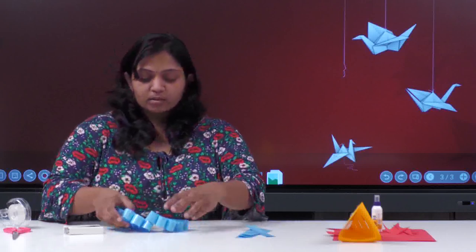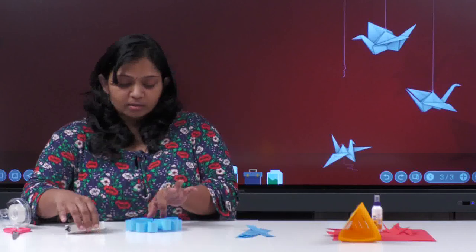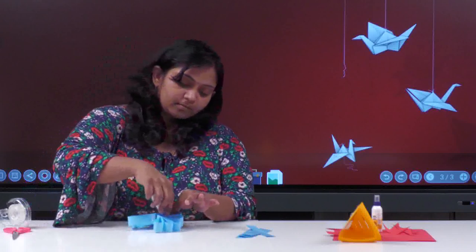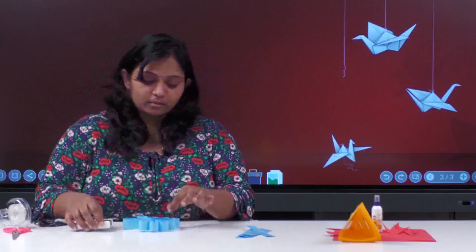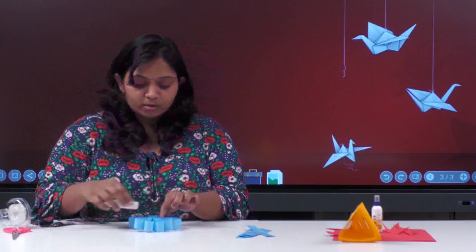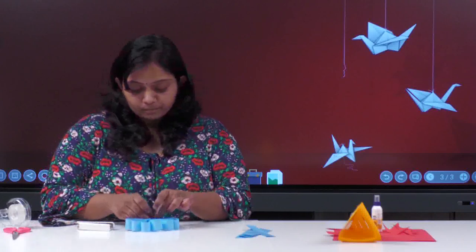Now what you'll do is hold these two together like this, and here you can punch with the stapler. If you think the cellotape is coming out, you can just do like this.